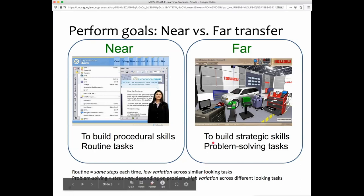In far transfer we want to build strategic skills to engage in problem solving tasks. In a problem solving task the steps vary depending on the problem, and across those tasks there may be very high variations. You might want a full-out simulation where you can do different things to repair the fuel and emissions of this car, whereas here it's more of a scripted procedure.